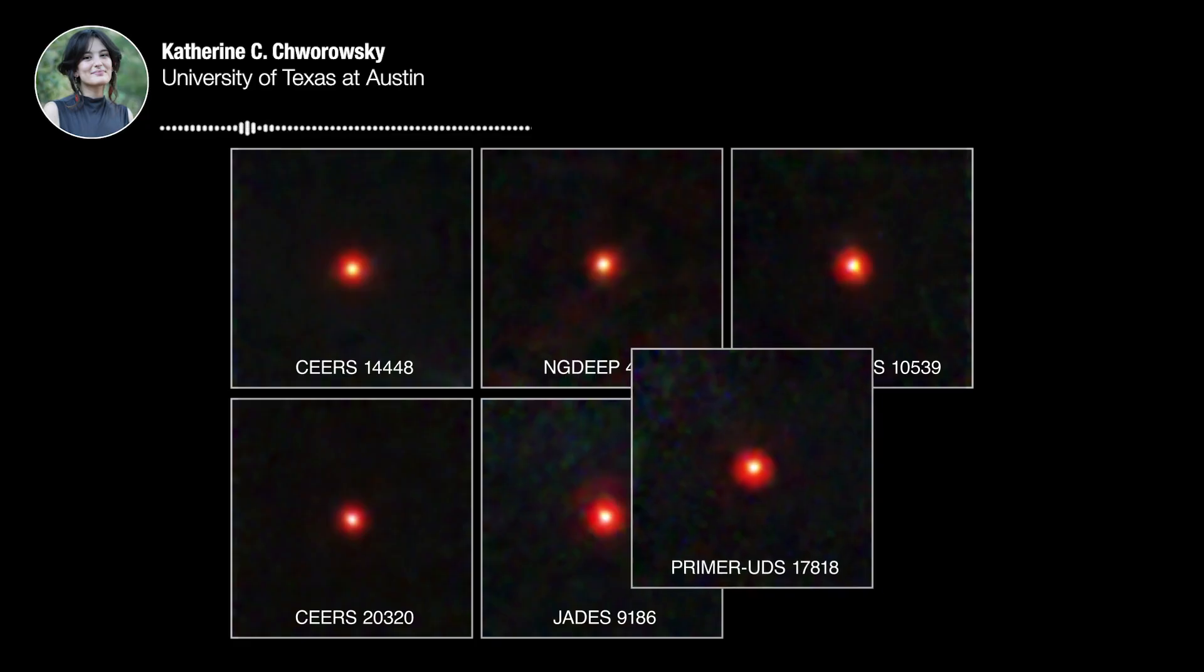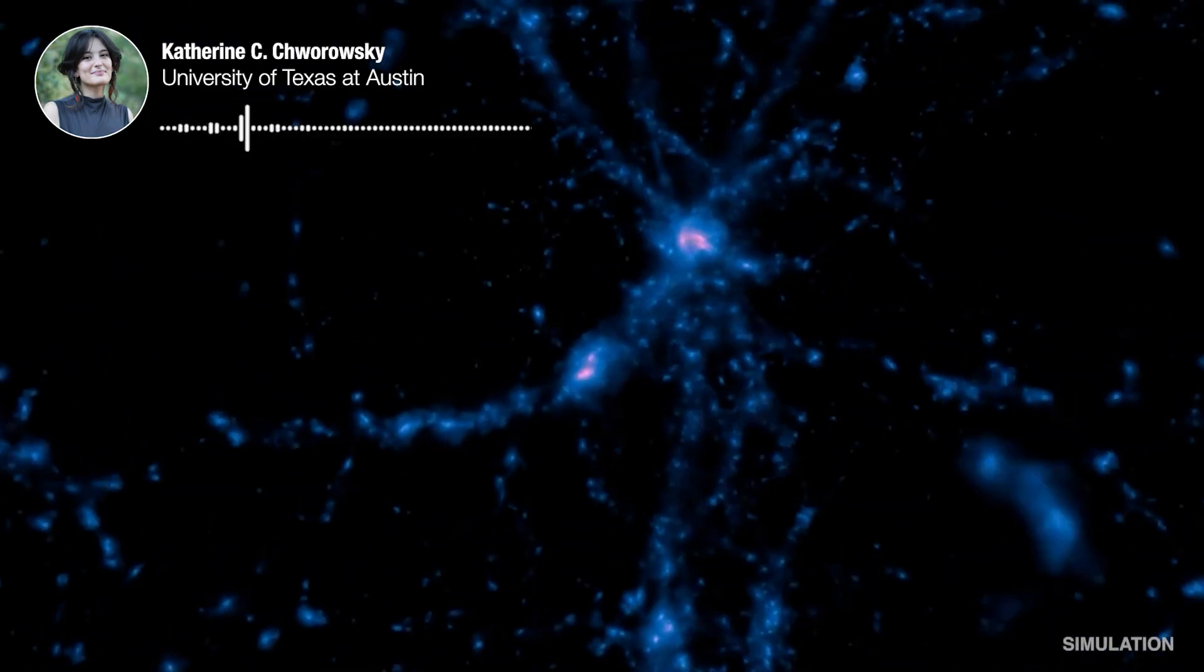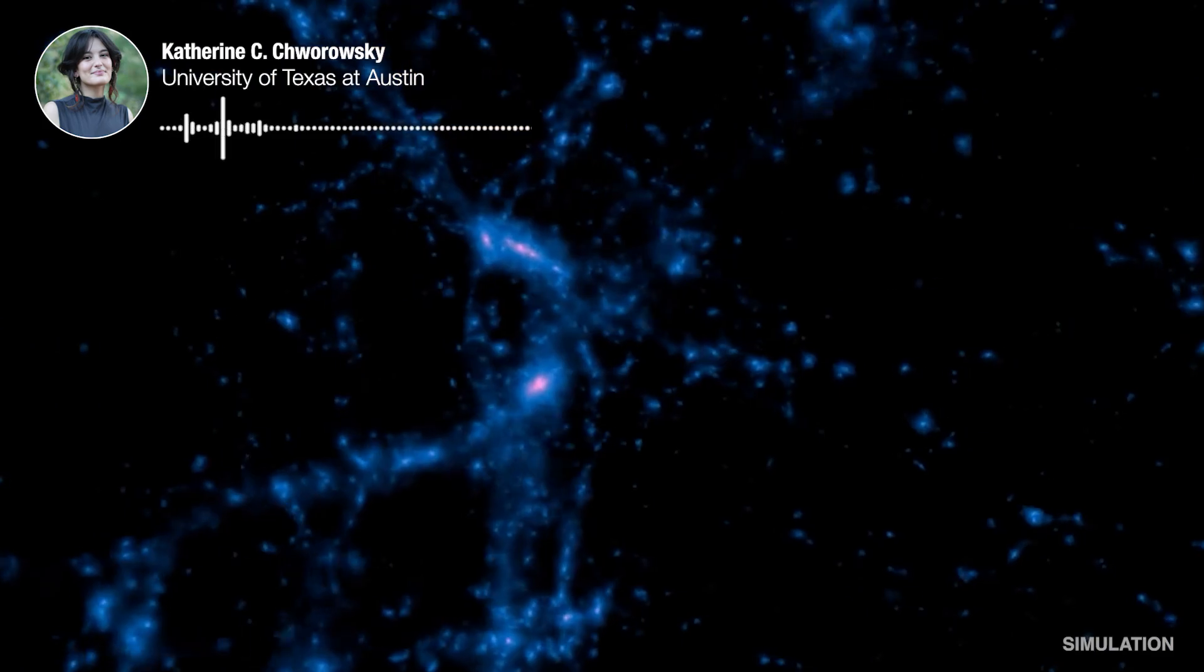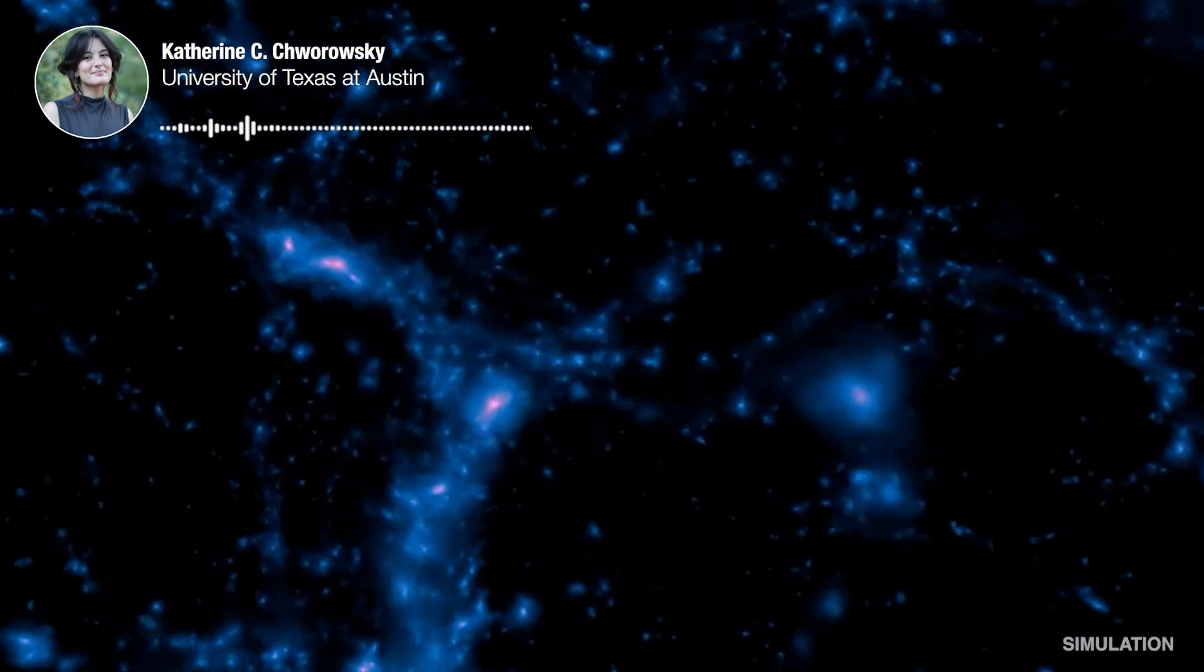They looked exactly like little red dots in the images. They're so compact, but there's so much light coming from them. In the early universe, there's only so much time to build up exorbitant mass. How is that physics happening?